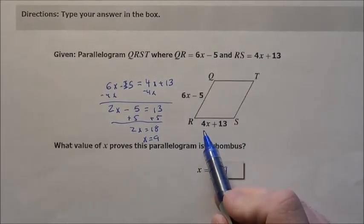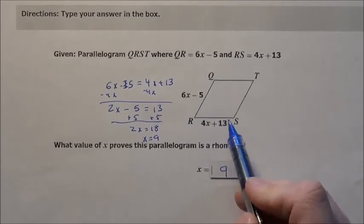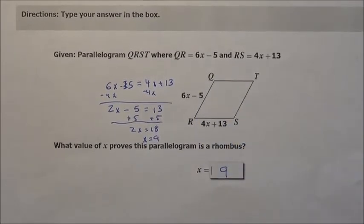When I put 9 in there, it will make all the sides, at least this side and this side, the exact same, and that will help it be a rhombus.